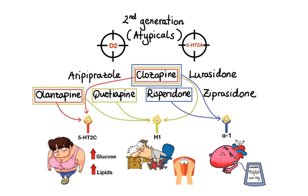In addition, out of all second-generation agents, risperidone seems to have the strongest affinity for D2 receptors, and because of that, it has the highest potential to induce extrapyramidal side effects and hyperprolactinemia. Lastly, clozapine is the only antipsychotic that can cause a serious condition called agranulocytosis, which occurs when the bone marrow does not produce enough white blood cells called granulocytes. Because this condition can be fatal, periodic blood cell counts must be performed to ensure patient safety.